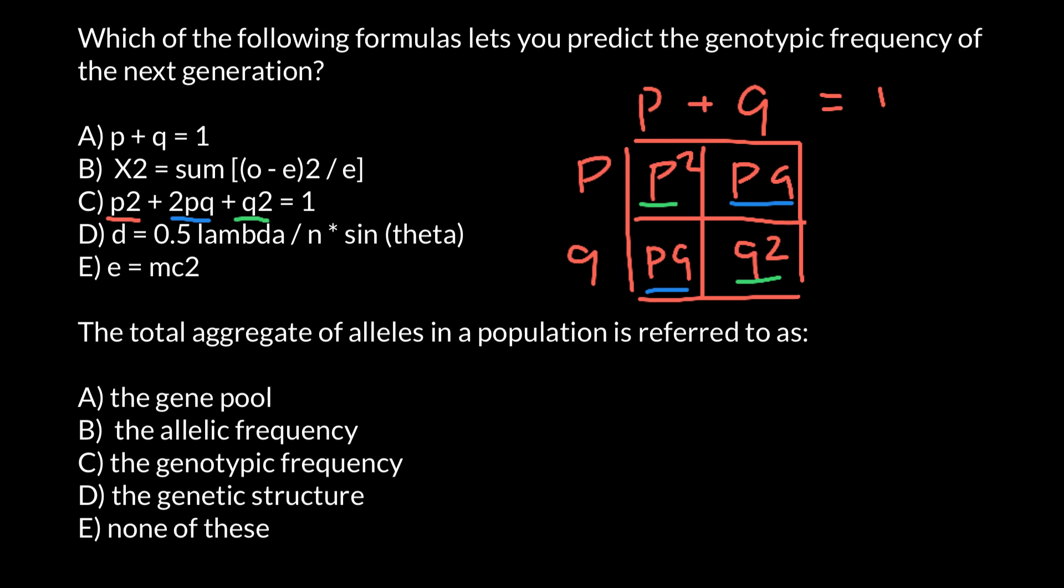Next question. The total aggregate of alleles in a population is referred to as... And you have to choose the correct answer.